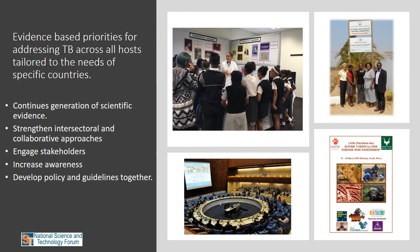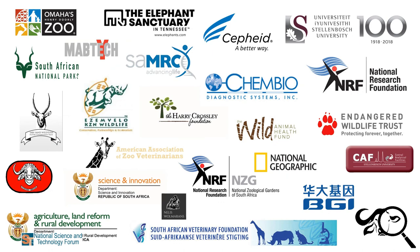To answer how the prevention of the spread of animal disease can be improved: from our experience with bovine TB, we need to continue generating scientific evidence, strengthen intersectoral and collaborative approaches, engage stakeholders, increase awareness, and develop policy and guidelines together. In a nutshell, we need evidence-based priorities for addressing TB across all hosts, tailored to the needs of specific countries. Our research would be impossible in isolation, and all our work over the past years has been done in collaboration with various stakeholders. We sincerely thank our collaborators, funding bodies, and institutions for their continued support.